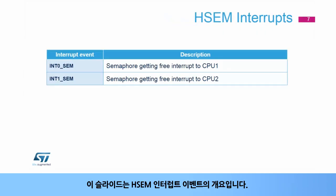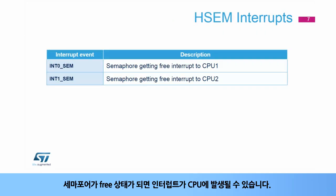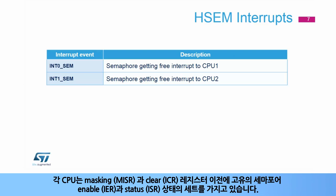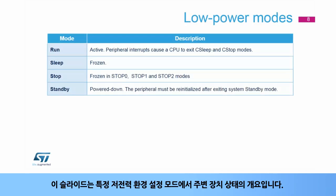Here is an overview of HSEM interrupt events. When a semaphore is freed, an interrupt can be generated to a CPU. Each CPU has its own set of semaphore enable or IER and status or ISR states before the masking or MISR, and clear or ICR registers.